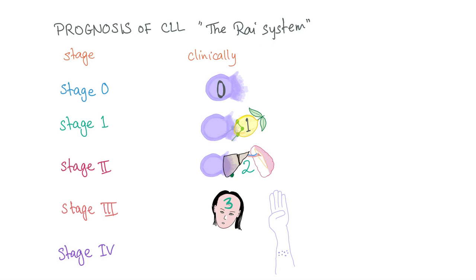Let's go over the RAI system again with visual mnemonics. Stage zero: lymphocytosis — we draw a zero inside the smudge cell. Stage one: we add lymphadenopathy, drawing a one on the lemon representing a lymph node. Stage two: lymphocytosis plus hepatosplenomegaly — we draw a two between the liver and spleen. Stage three is anemia — here's the three. Stage four is thrombocytopenia — here is a guy doing the sign of number four, and he has PTK.